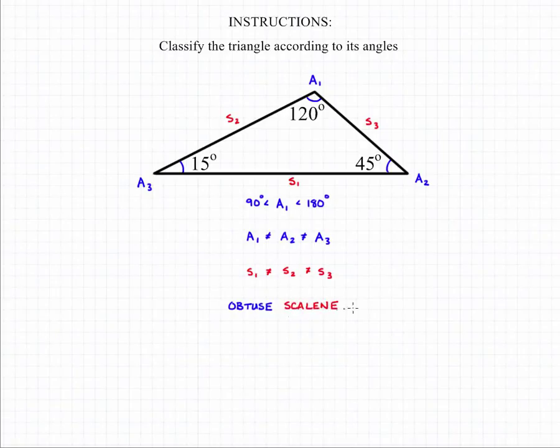The fact that none of the sides are equal tells us we're dealing with a scalene triangle. So if we put all of that information together, we get our final answer, which is that we can classify this triangle as an obtuse scalene triangle.